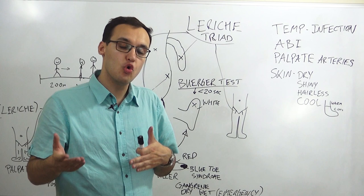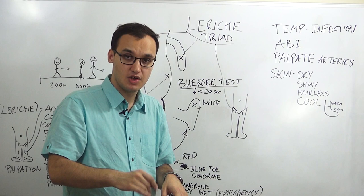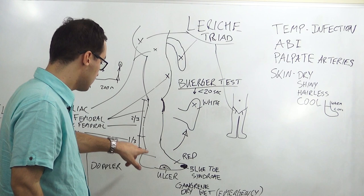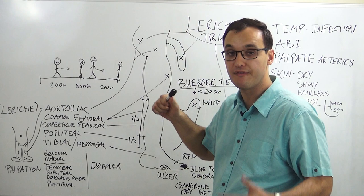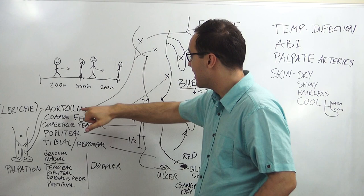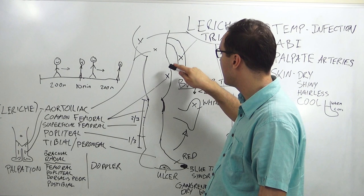These patients often prefer to sit with their legs down. We can also look at different regions of the leg: if the aorta and iliac arteries are affected, there will be pain in the buttock or hip region. For the common femoral artery, pain is in the thigh or calf region.